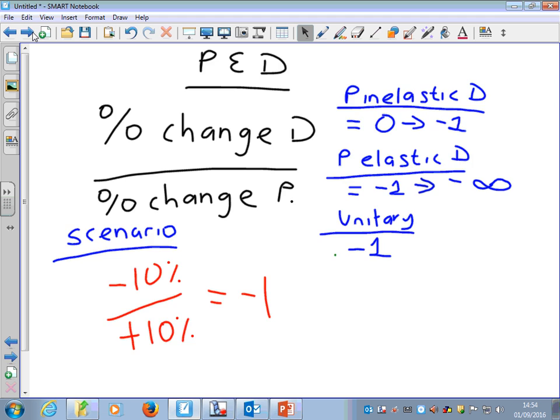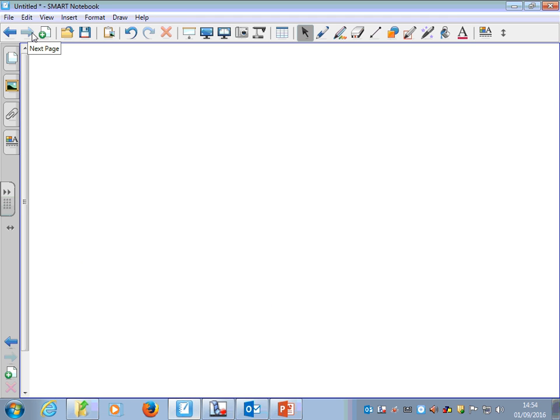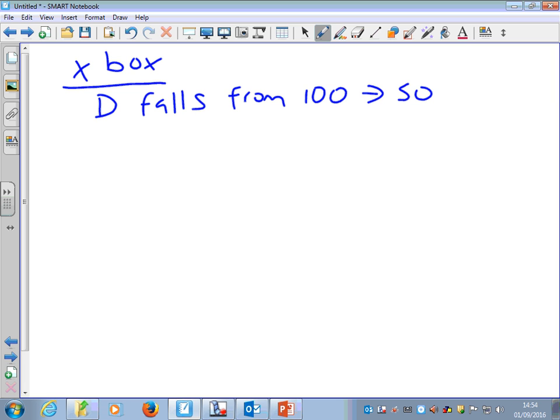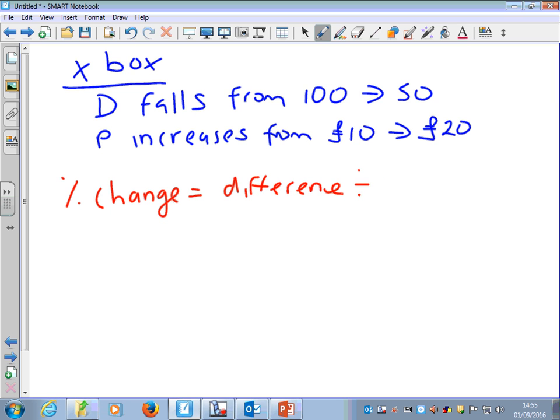Now, in the exam, what they will sometimes do is something which catches some students out. They might ask you to work this out, but they might not give you the numbers. So think about this. Imagine we were looking at the market for Xbox again. And they might say to you that the demand falls from 100 to 50. And that happens because the price increases from £10 all the way up to £20. Let's imagine it's for an Xbox game rather than the console. Now, what you would need to use to work this one out is a different formula. Percentage change. This is basically the difference divided by the original times 100.